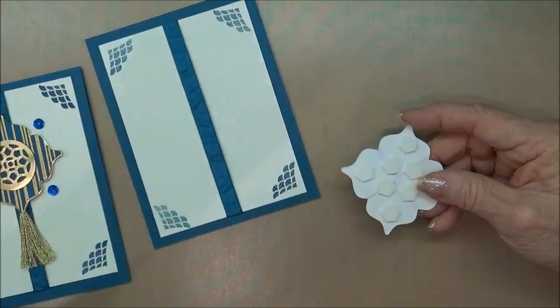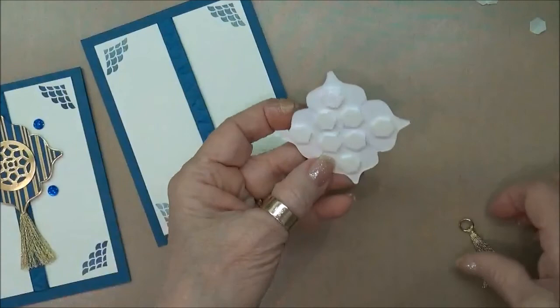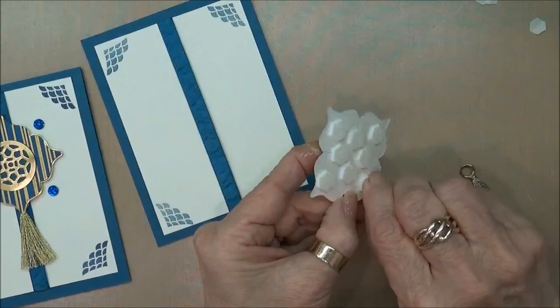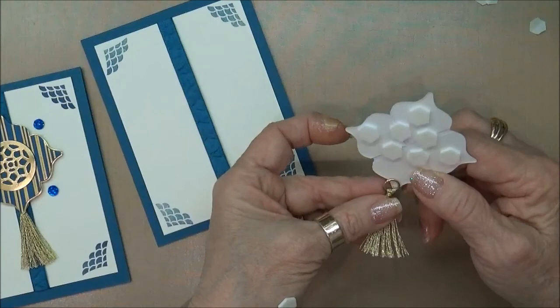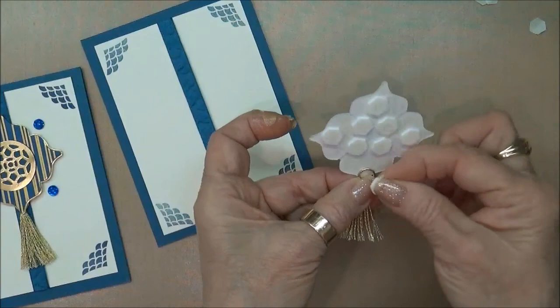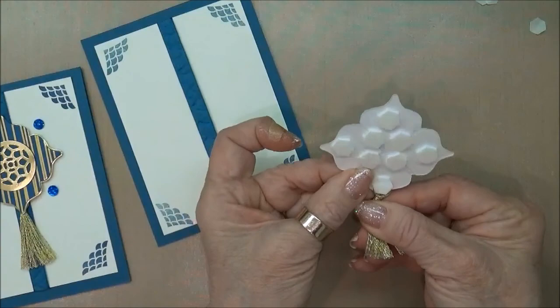Now that I've taken off all the backing, I'm going to take my tassel and put it on the medallion. All I'm going to do is hook it down with a dimensional, and that will hold it in place.